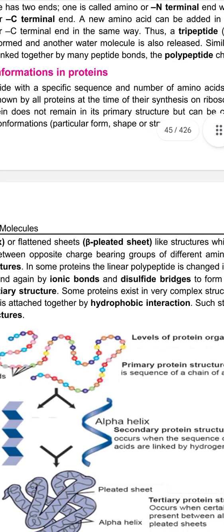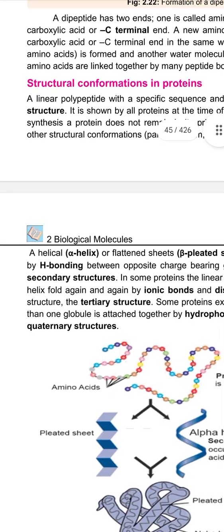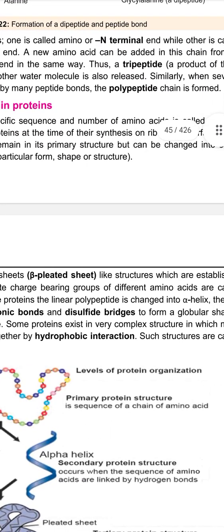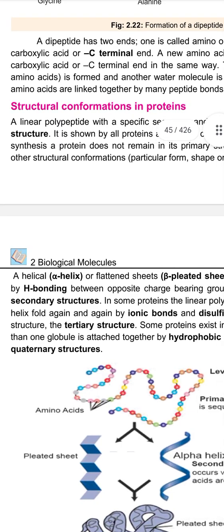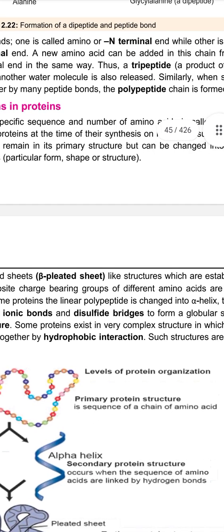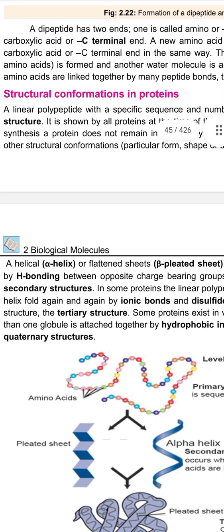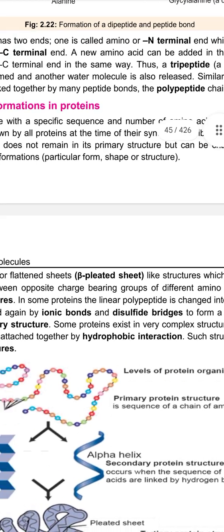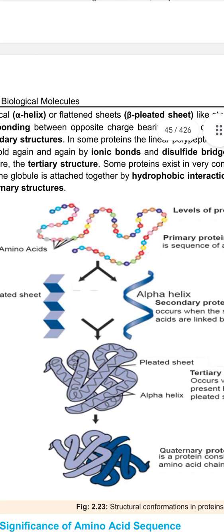Some proteins exist in very complex structures in which more than one globule is attached together by hydrophobic interactions. Such structures are called quaternary structures. These are shown in figure 2.23.